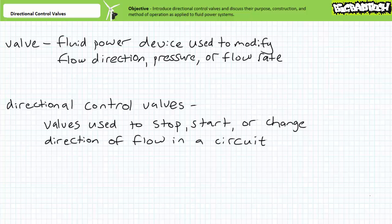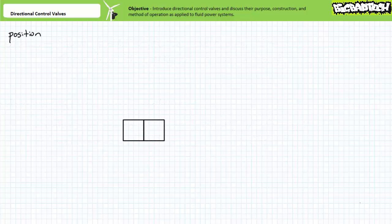Directional control valves are best introduced using a progressive examination of the schematic symbols that make them up. We'll start out slow and increase the speed and intensity as we go along. Valves are ordinarily drawn schematically as boxes, where each box is an independent position the valve can assume. Each valve position performs a particular function. Since this schematic symbol has two boxes, this valve is a two-position valve.